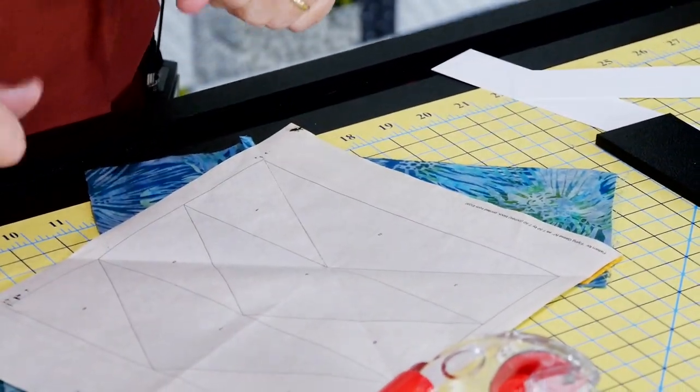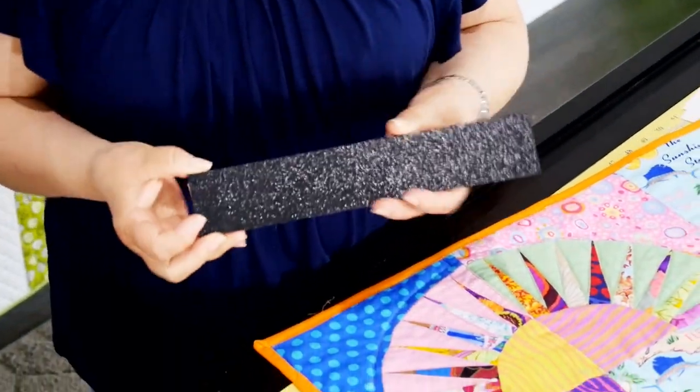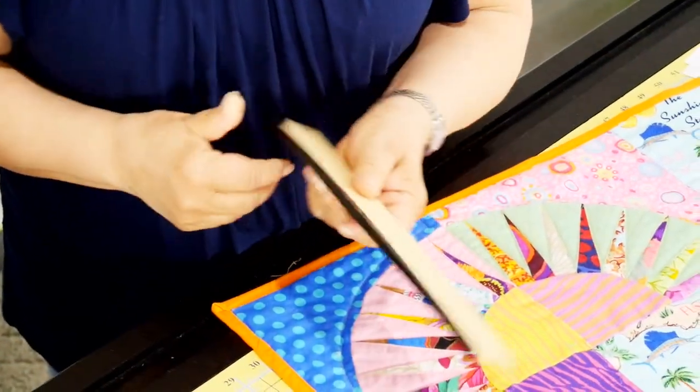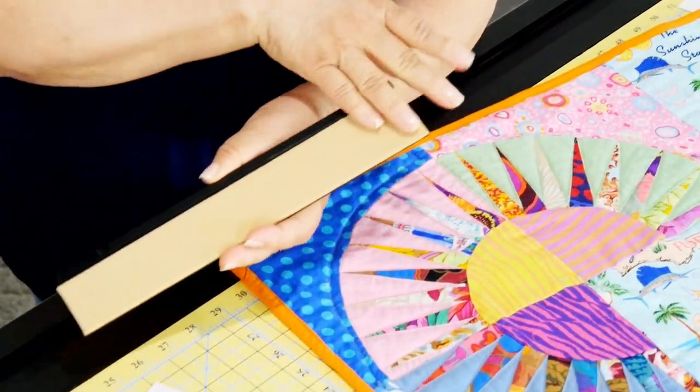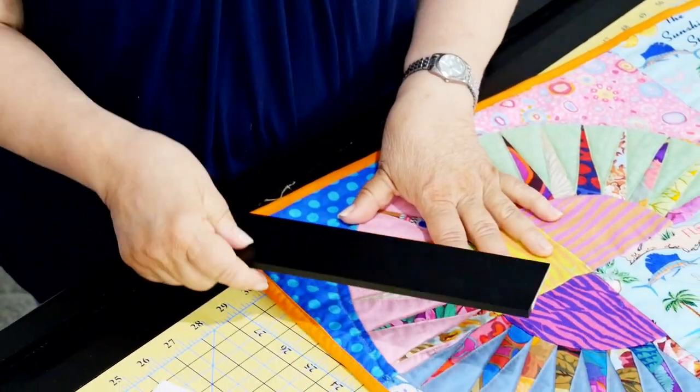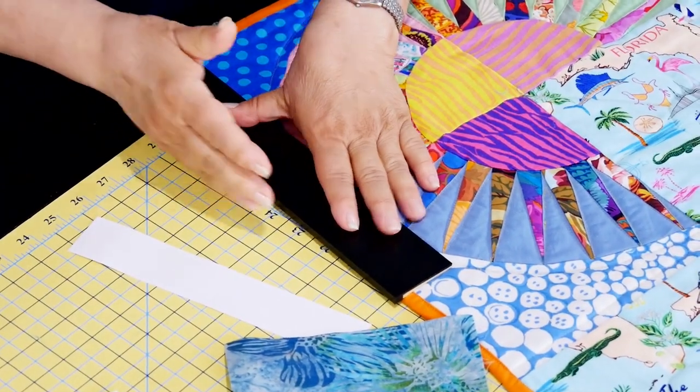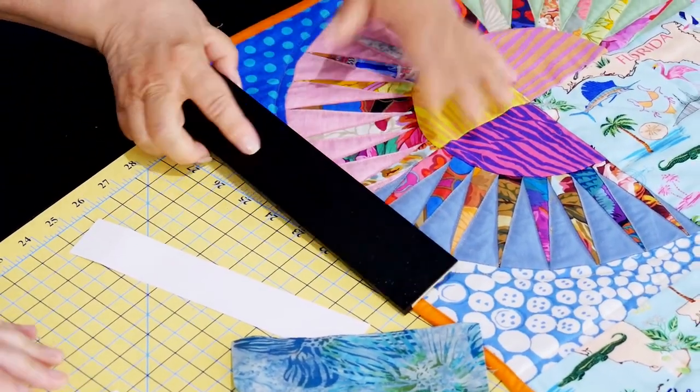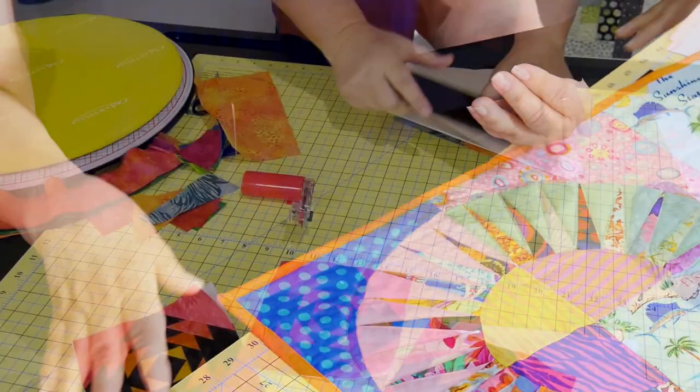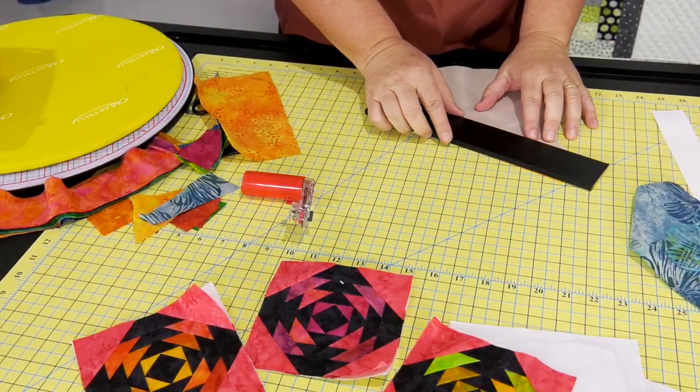All right everybody. We want to show you why we think Martelli's paper piecing ruler is going to be superb. In the first place, on the back we have our grip. It does not slide. So when you're laying it on your paper pieced item and you're cutting, it doesn't move, just like all the other templates.